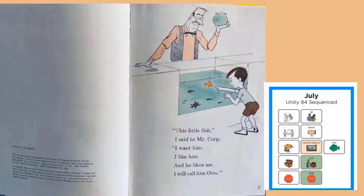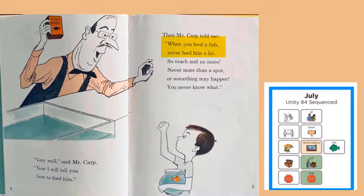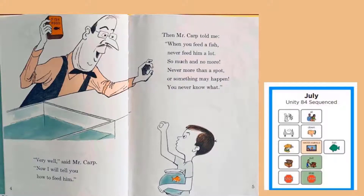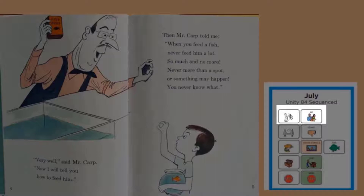Do you have any pets? Very well, said Mr. Carp. Now I will tell you how to feed him. When you feed a fish, never feed him a lot, so much and no more, never more than a spot, or something may happen, you never know what. Mr. Carp told him how to feed his fish — never feed him all of the food, just a little tiny bit.